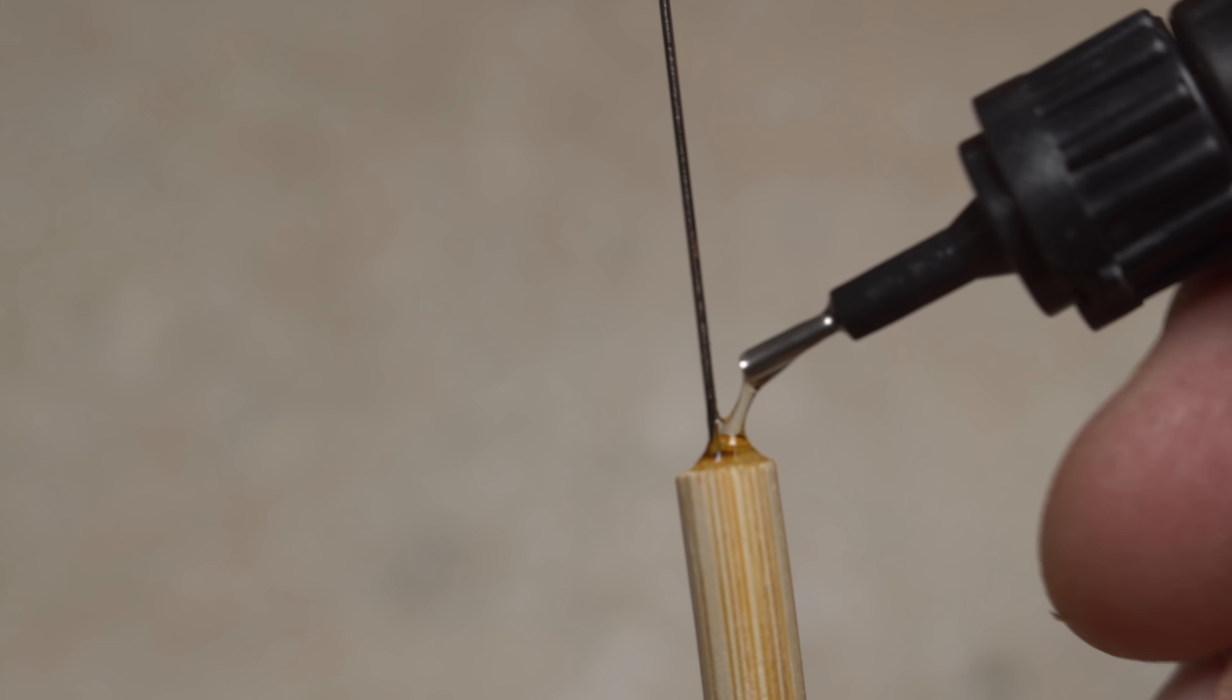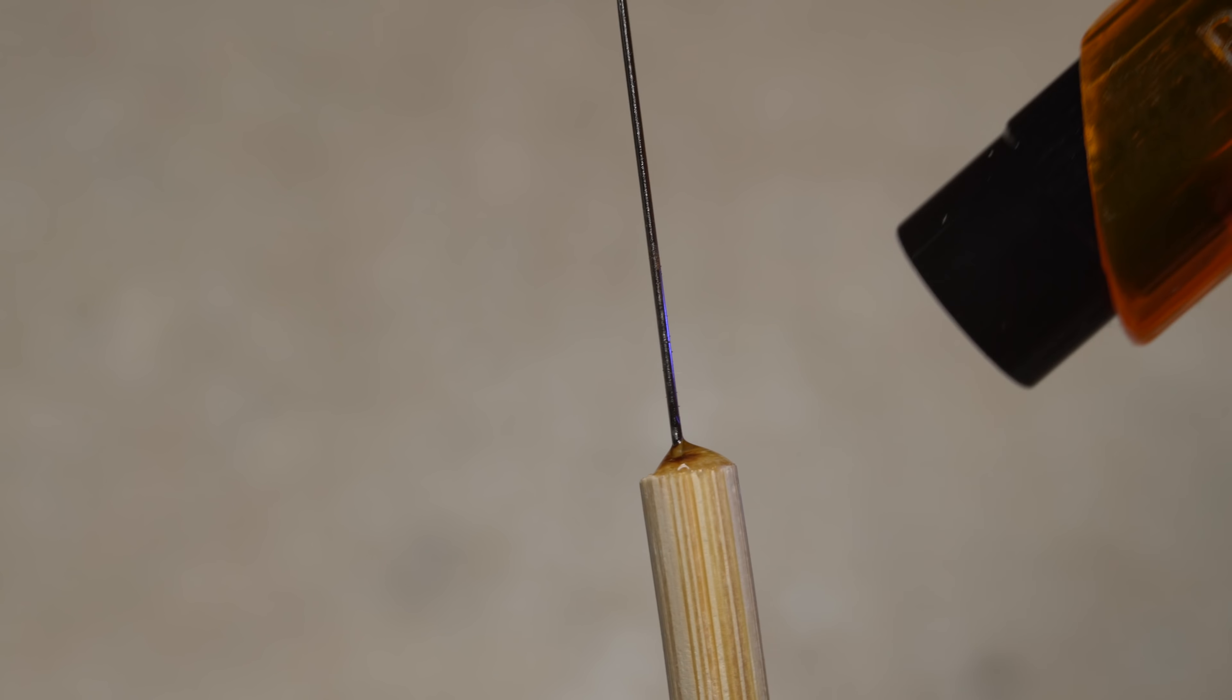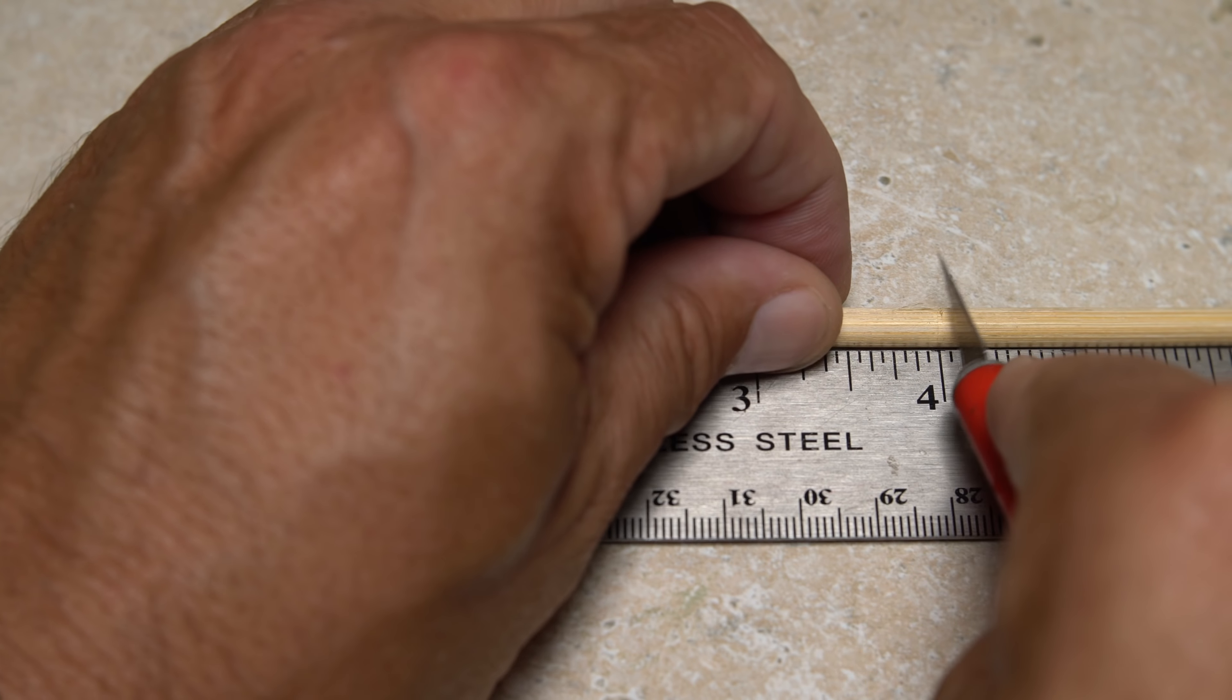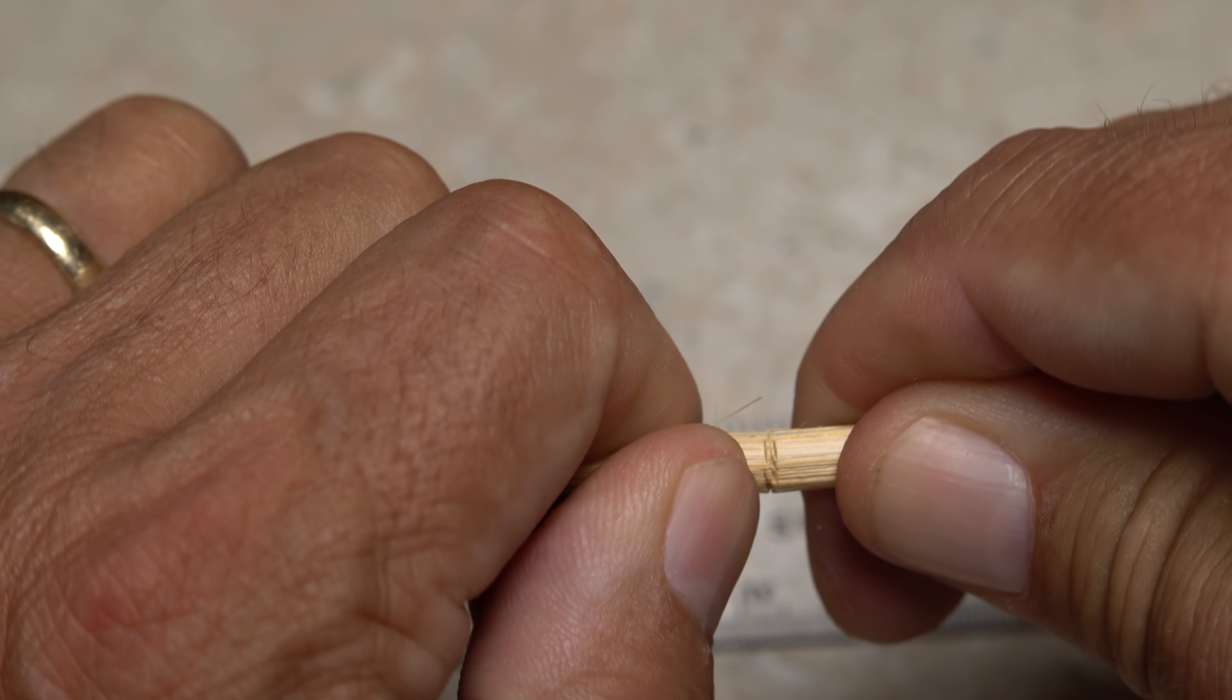Surround the base of the needle with a bead of UV cure resin and cure it with UV light. Cut the chopstick to length (here, four inches) by scoring all the way around with a hobby knife and then breaking the chopstick at that point.